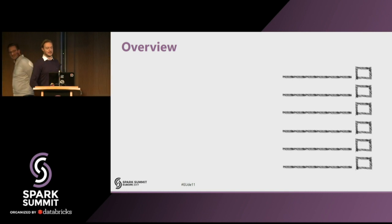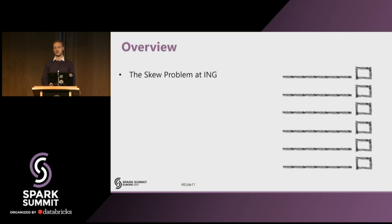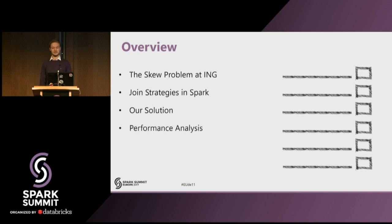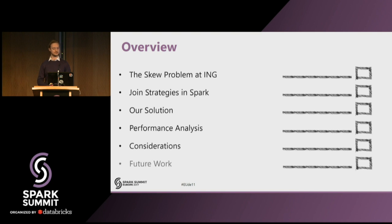So what we'll be covering today. First, we'll be discussing a particularly challenging data skew problem that Fokker and I both encountered while working as contractors at ING Bank. We'll be talking about the theory of join strategies available out of the box in Apache Spark and why these are so heavily affected by data skew. Then I'll hand back to Fokker for introducing our solution — the iterative broadcast. We've done an in-depth benchmark and will show the performance numbers, then discuss considerations and future work.